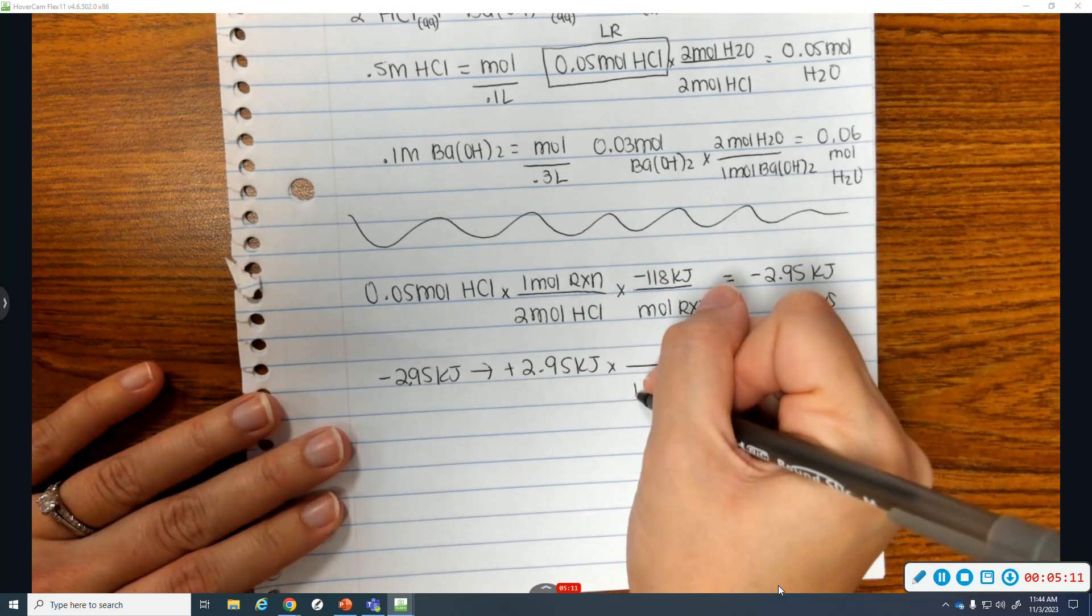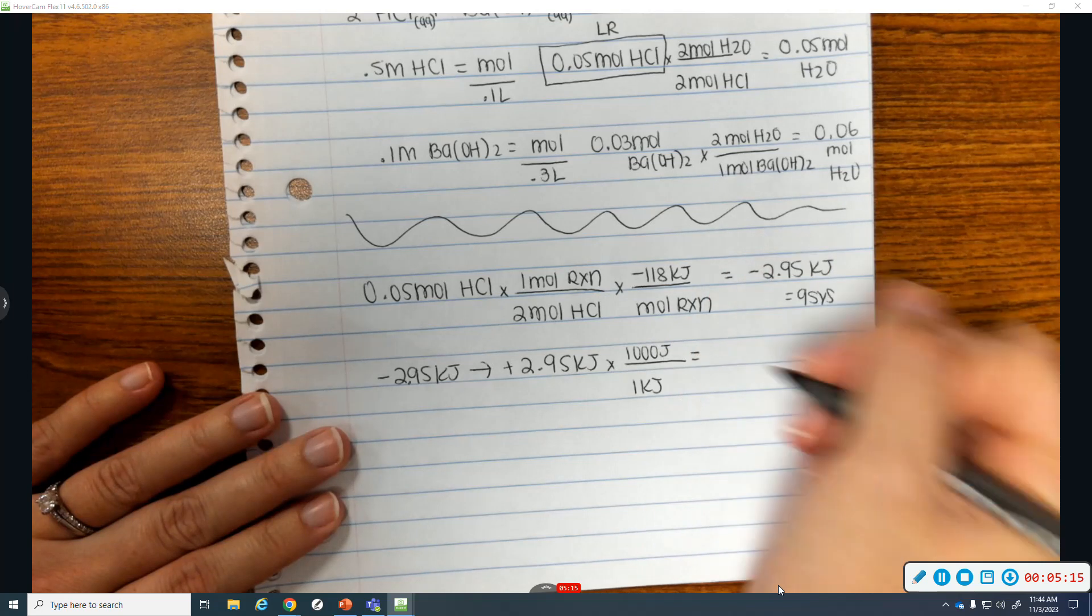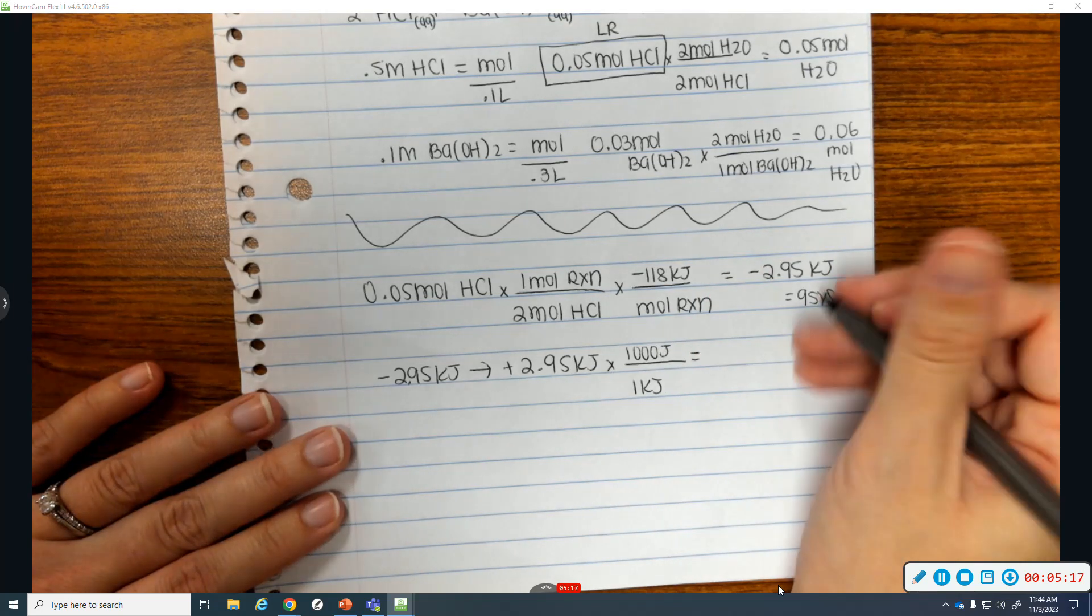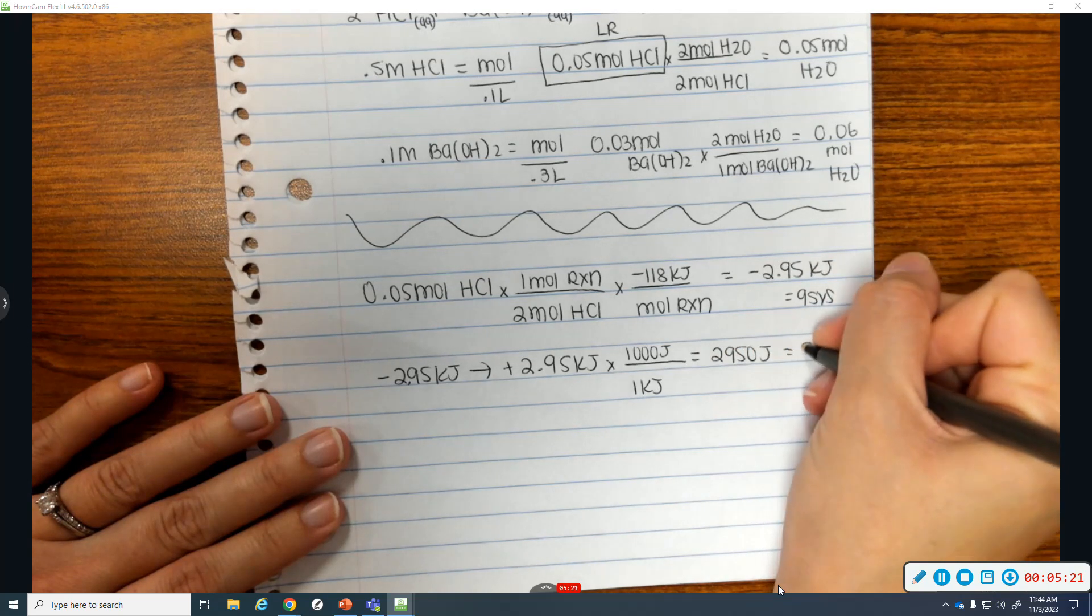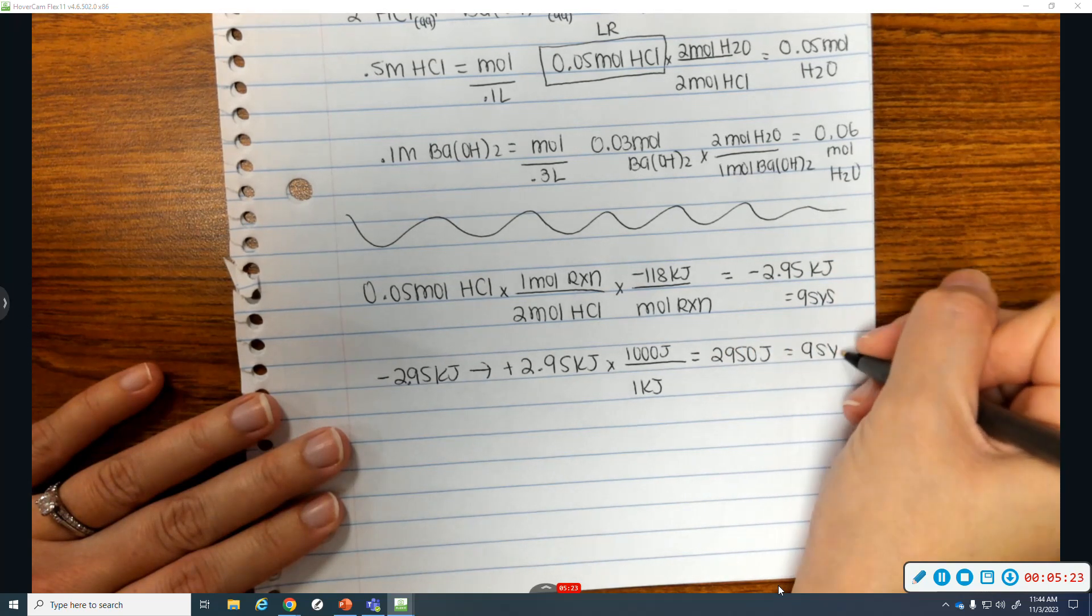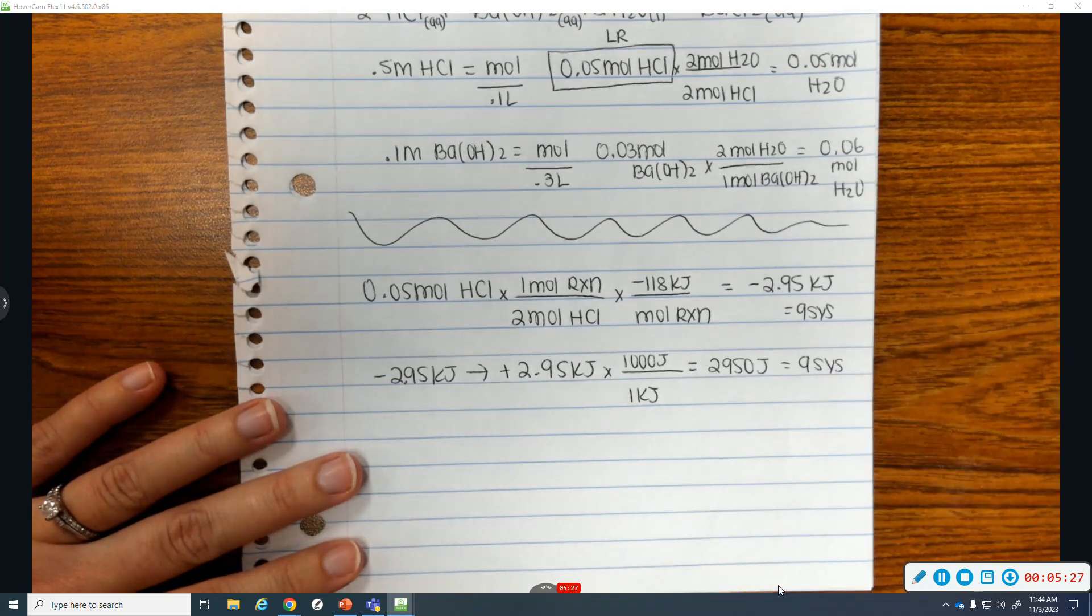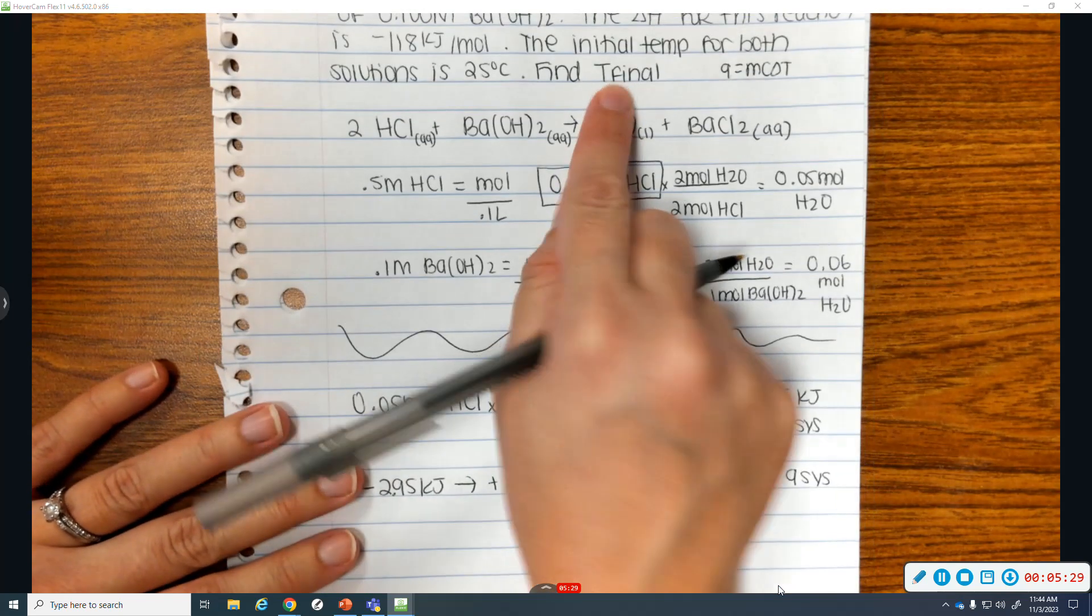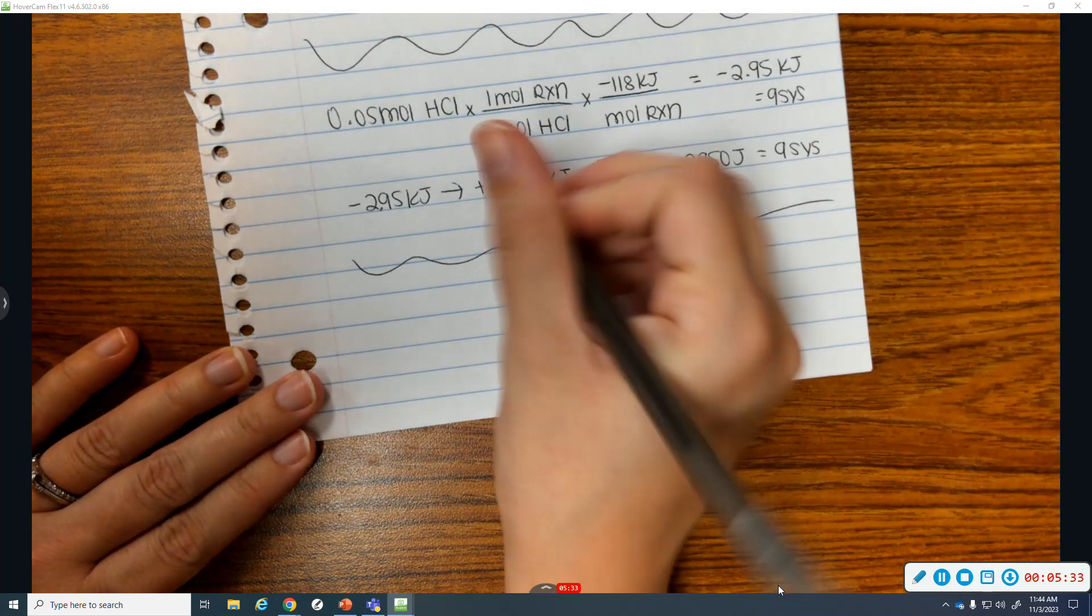And I want to make it joules. So, 1 kJ, 1,000 joules. That is 2,950 joules is the Q for my system. Okay. Now that I have a Q, I can find a final temperature.